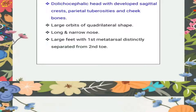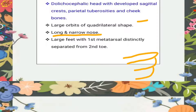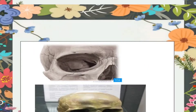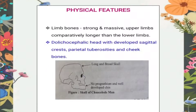Since their body is narrow, they have a very long and narrow nose. Coming to the foot, their first metatarsal is separated from the second — the first metatarsal and second toe are not connected at all. Moving forward, their limb bones are quite massive and very strong.